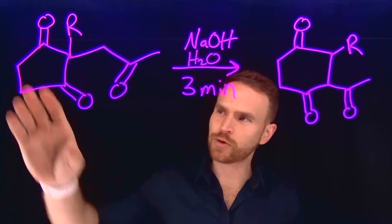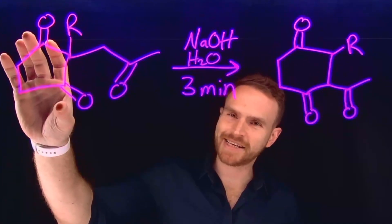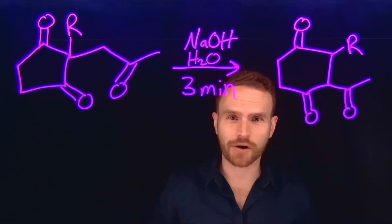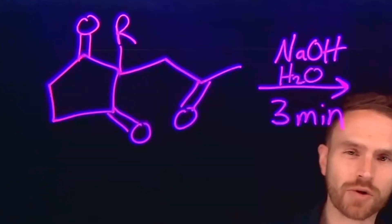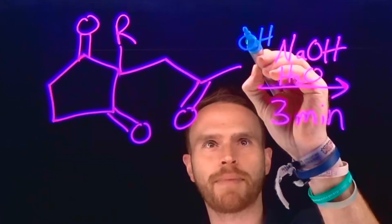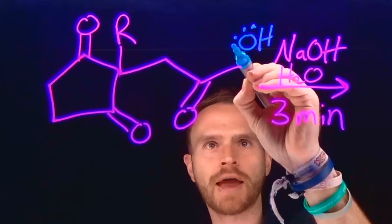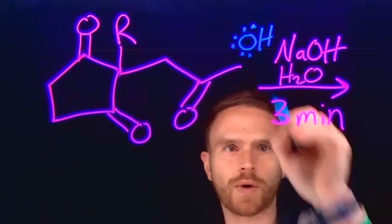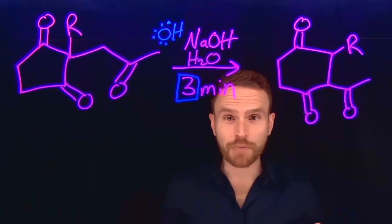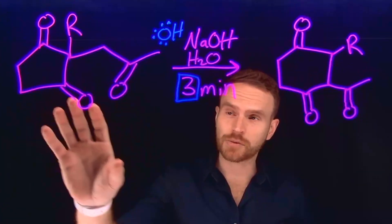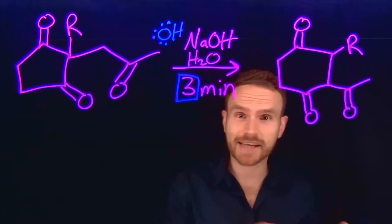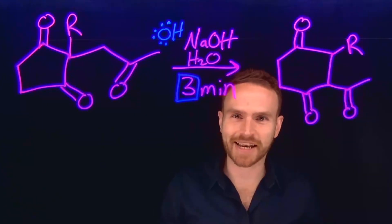In this chemical transformation, we're turning a 5-membered ring that's a diketone into a 6-membered ring that's also a diketone. We're doing this through the addition of sodium hydroxide, which remember is a base you can treat as OH⁻, and water. This reaction takes place very quickly, especially at 3 minutes specifically. This is important because this reaction, under a slightly different set of conditions, can create an entirely new product, which we'll see in the second half of this video.